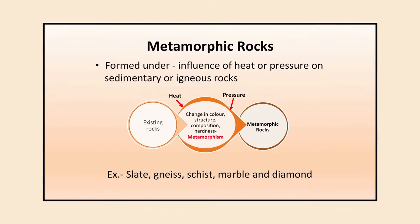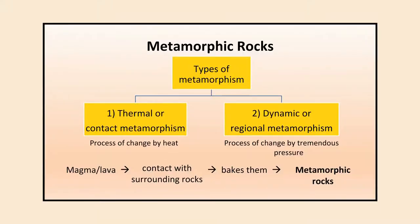Examples of metamorphic rocks are slate, gneiss, schist, marble, and diamond. There are two types of metamorphism: thermal or contact metamorphism, which is the process of change by heat, and dynamic or regional metamorphism, which is the process of change by tremendous pressure. Magma comes out as lava, makes contact with surrounding rocks, bakes them, and changes their shape, color, and hardness, forming metamorphic rocks.